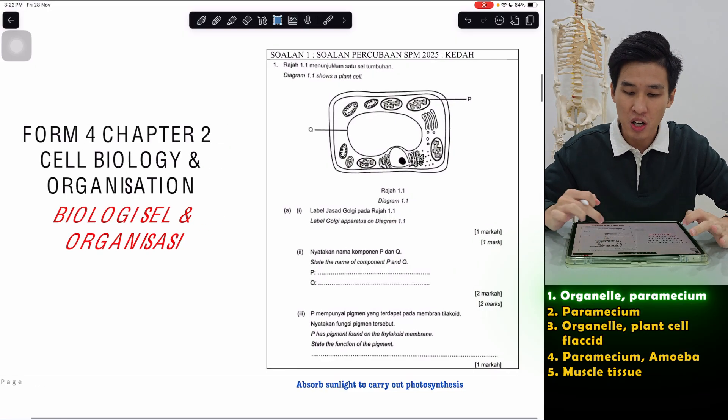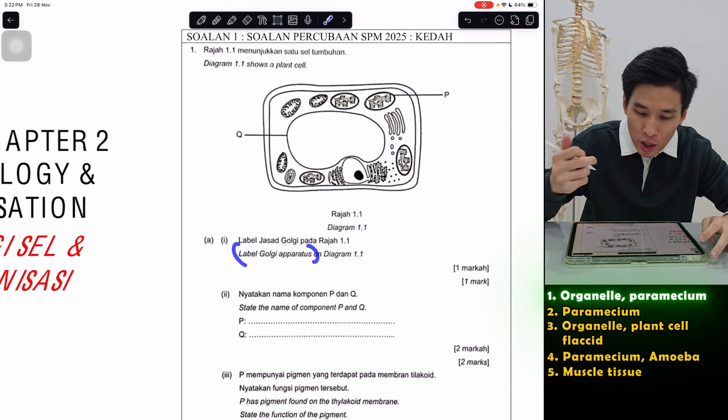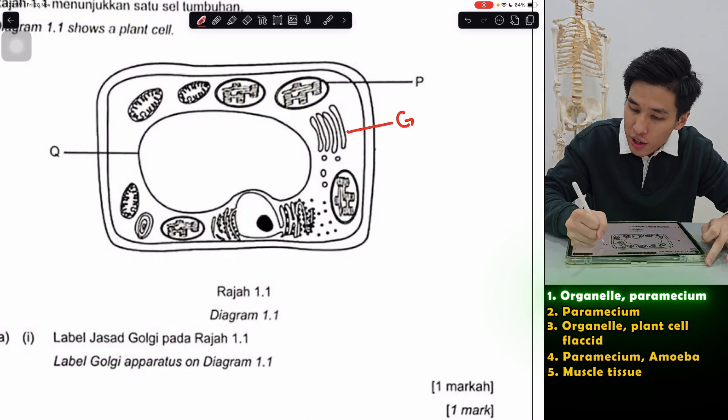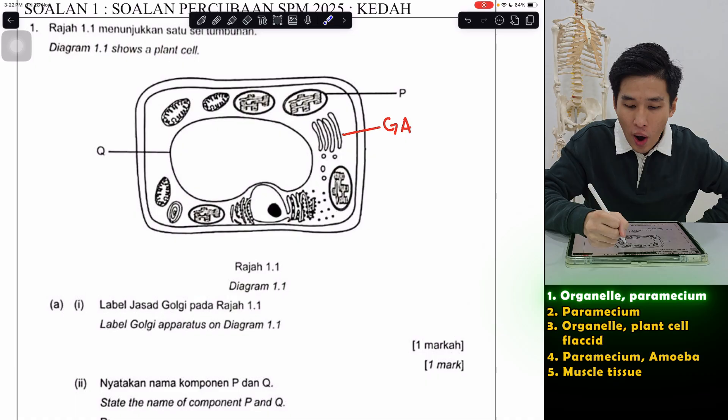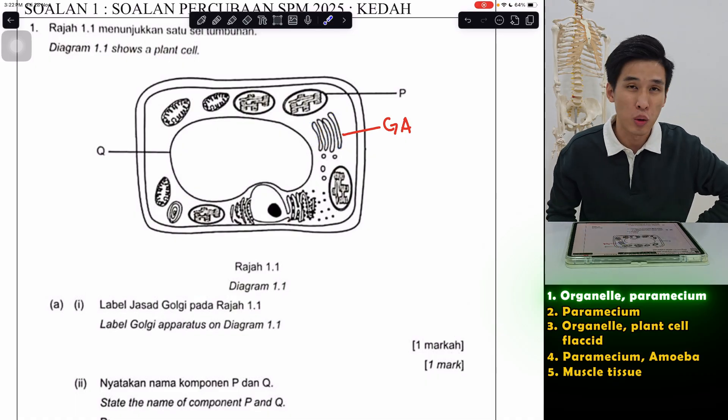So first question, typical kind of organelle question, Keda 2025. The first question asks us to label Golgi apparatus. Now Golgi apparatus obviously is this, I just write here G.A. So Golgi apparatus is like a Wi-Fi shape thing you see, layer, layer, layer like that. Also look like Spotify, Punea logo like that.